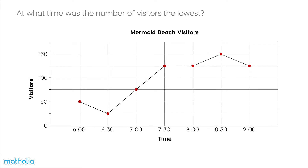At what time was the number of visitors the lowest? The lowest number of visitors was 25. By looking at our graph, we see that at 6:30, there were 25 visitors. The number of visitors was lowest at 6:30.